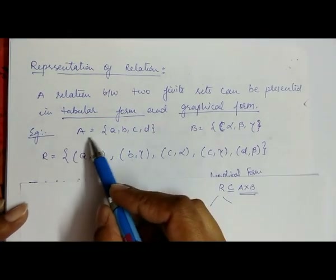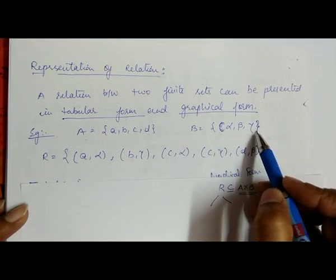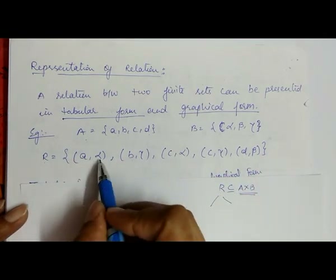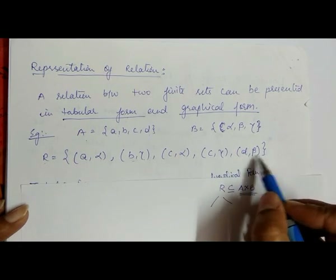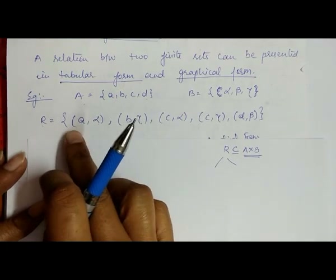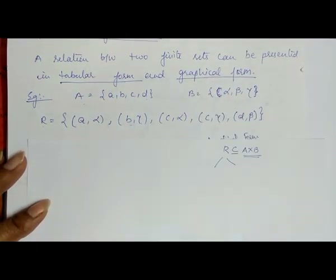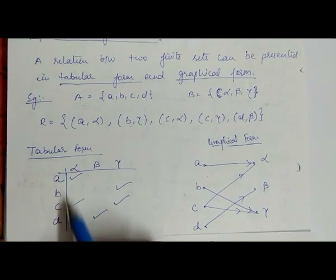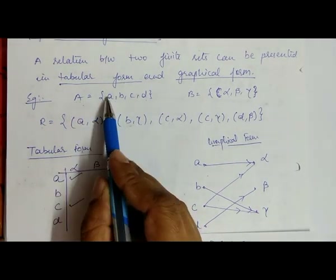For example, if we have a set A equals {a, b, c, d} and B equals {alpha, beta, gamma}, and we have a relation R described as (a, alpha), (b, gamma), (c, alpha), (c, gamma), and (d, beta), then we can represent this relation R in two forms: tabular form and graphical form.